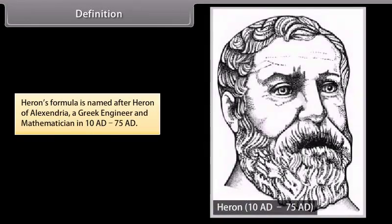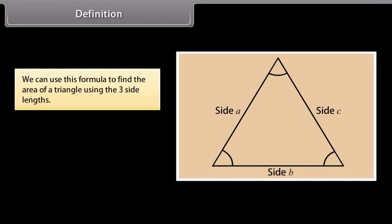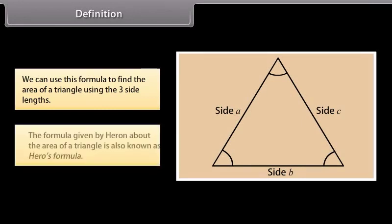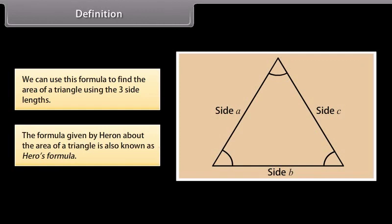Heron's formula is named after Heron of Alexandria, a Greek engineer and mathematician (10–70 AD). We can use this formula to find the area of a triangle using the three side lengths. The formula given by Heron about the area of a triangle is also known as Heron's formula.